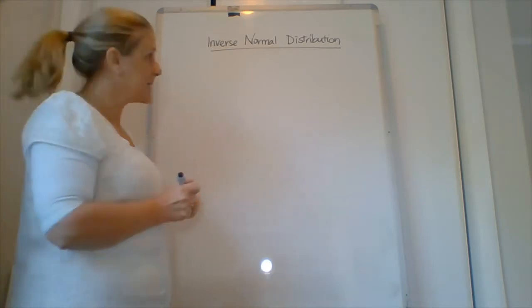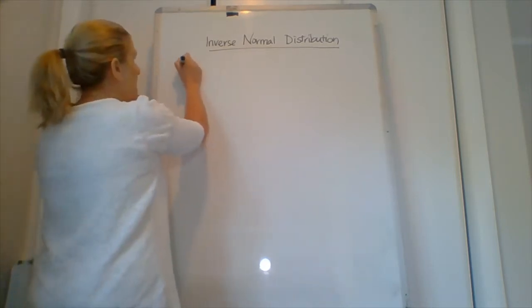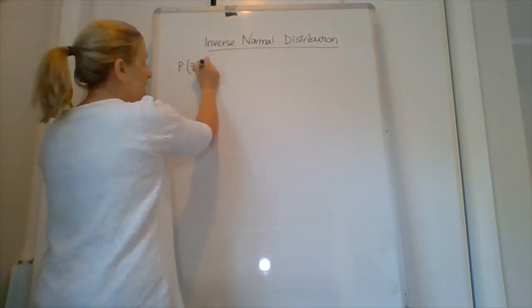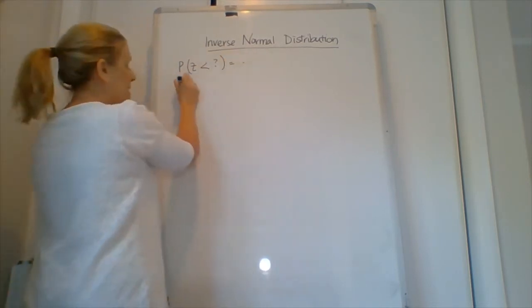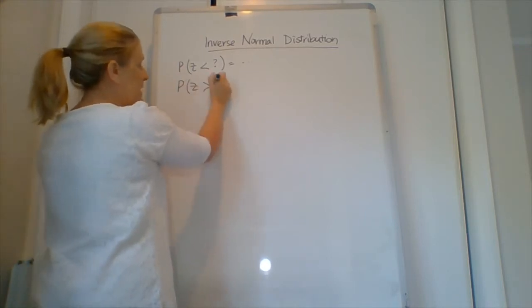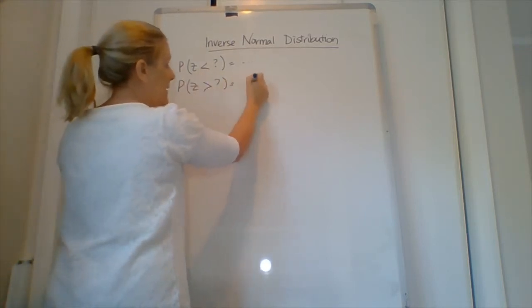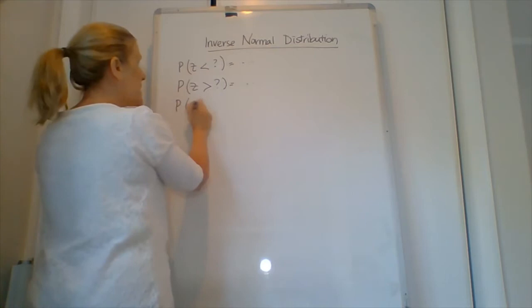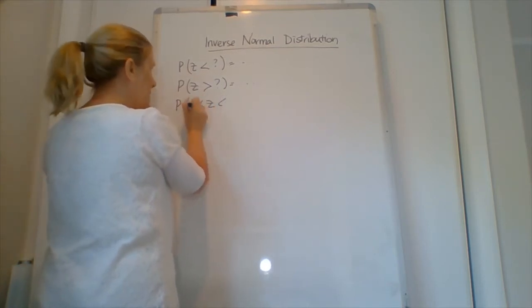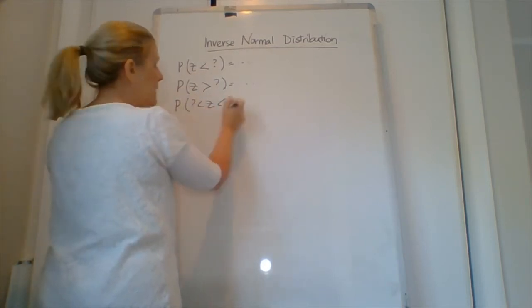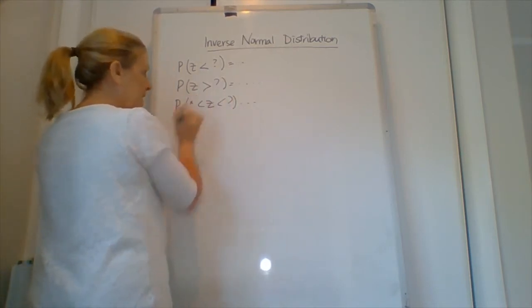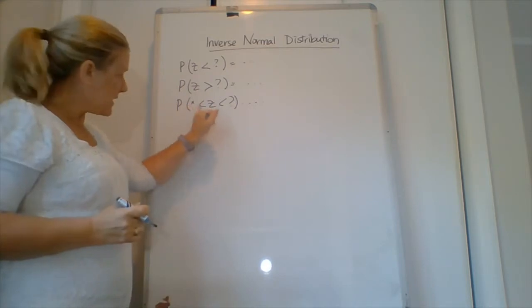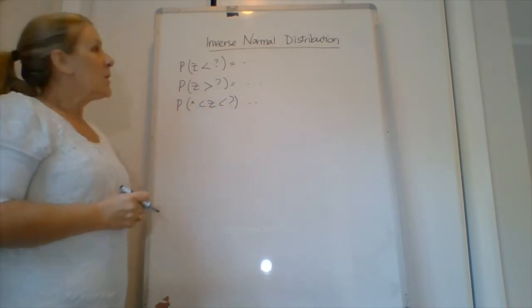We have to really carefully read the question because we need to draw that diagram to represent the question. So we've got three different cases. We've got the probability that x will be less than something equaling something. We've got the probability that z will be greater than something, and we've got the probability that z might be between two things. But they have to tell us one of these.